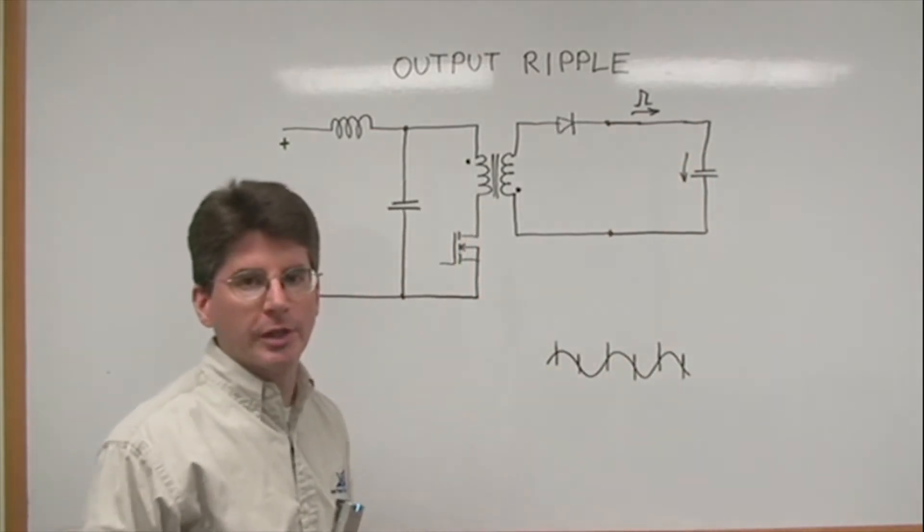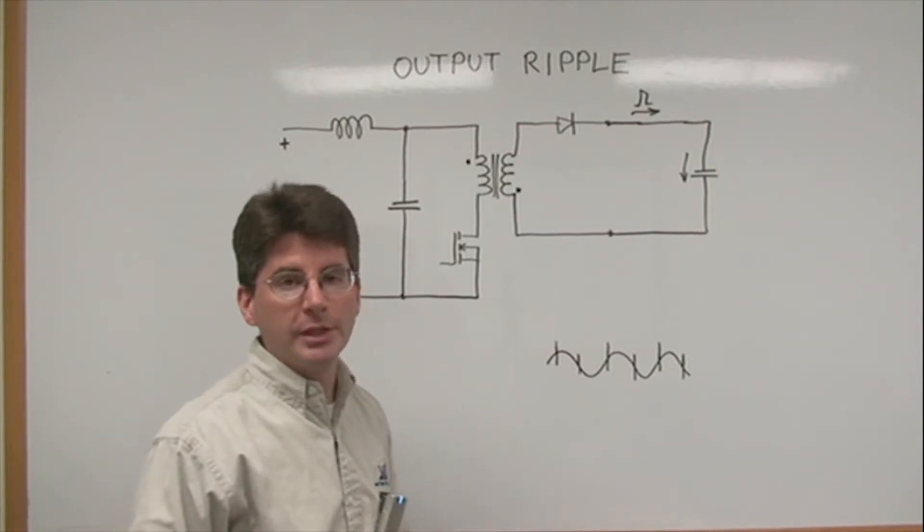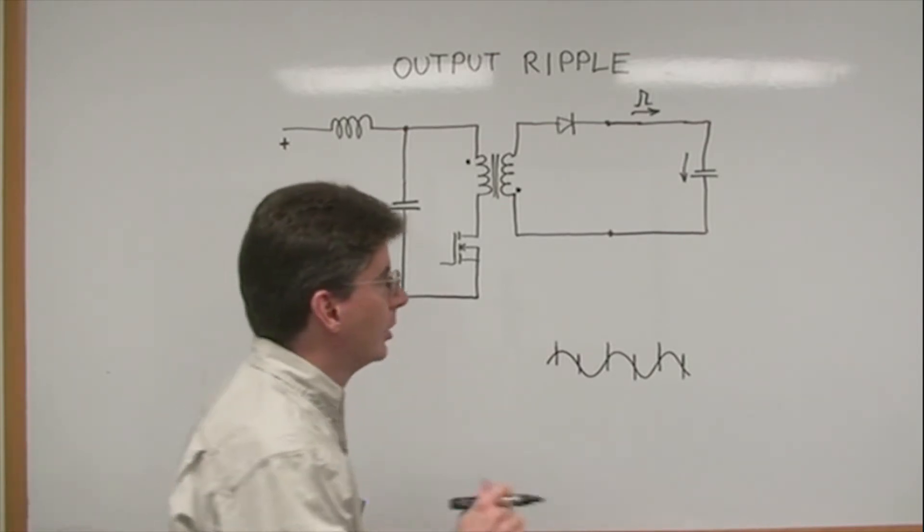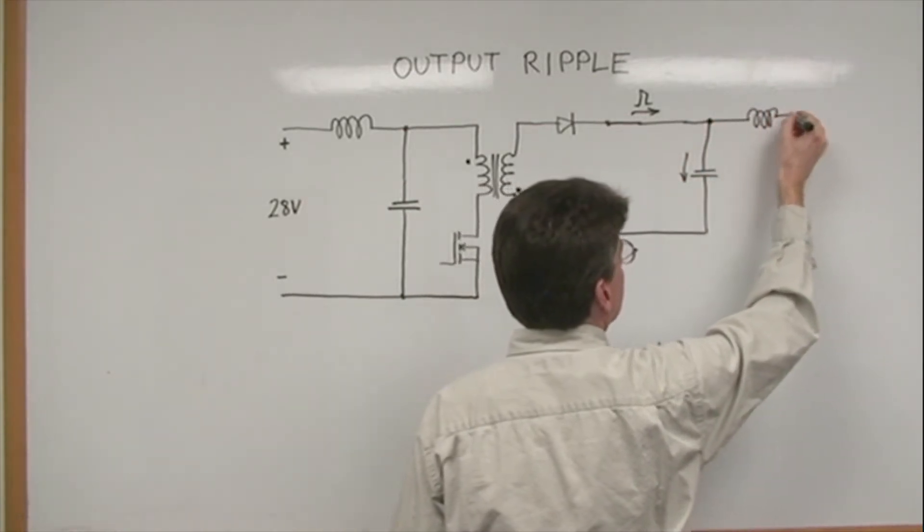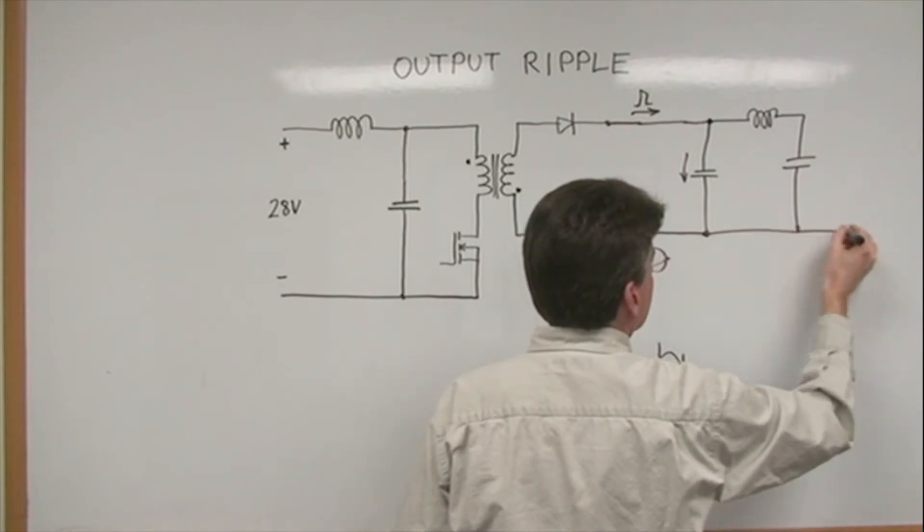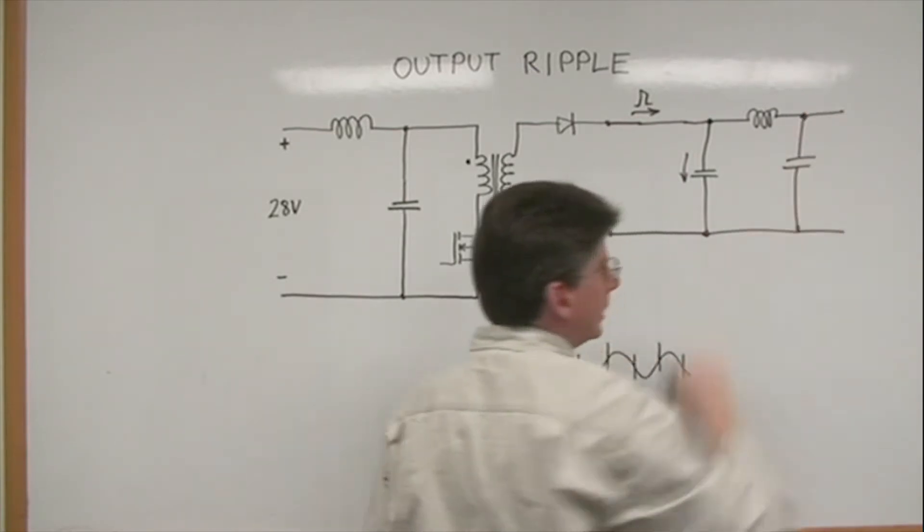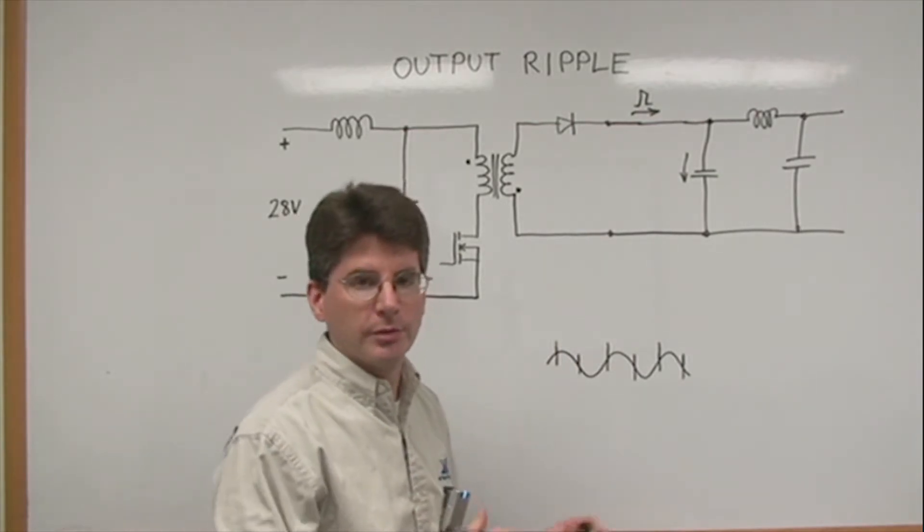Internal to most all of VPT's DC-DC converters, we include a second stage output filter. This, along with low ESR output capacitors, gives very low output ripple for the basic DC-DC converter by itself.